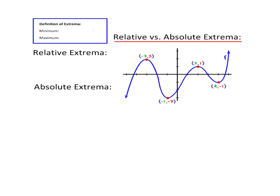What's the difference between Relative and Absolute? Relative is kind of like your relatives — closely related, close to you. A Relative Extrema is an extrema that's the highest or lowest point just in a certain area. So if I circle this area here, you can see it has a maximum value of 2 there — that's the point negative 2, 3. Relative Extrema is just relative to a small specific area.